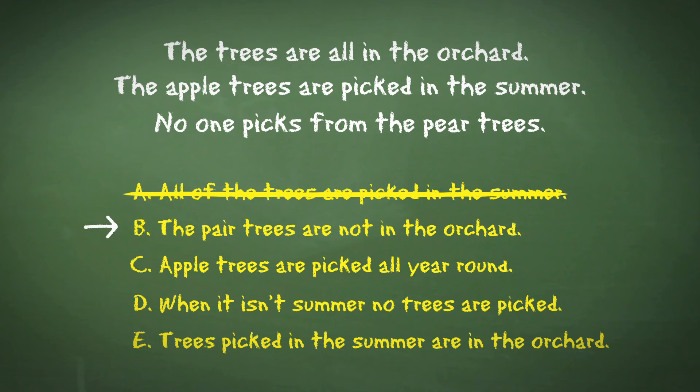Moving to B. The pear trees are not in the orchard. This contradicts the first statement, the trees are all in the orchard.